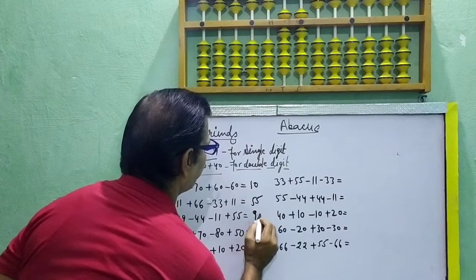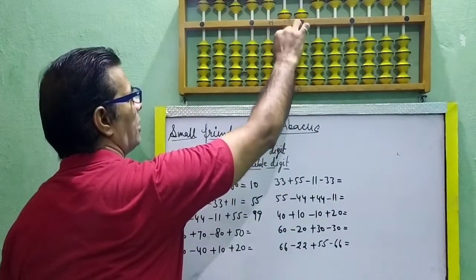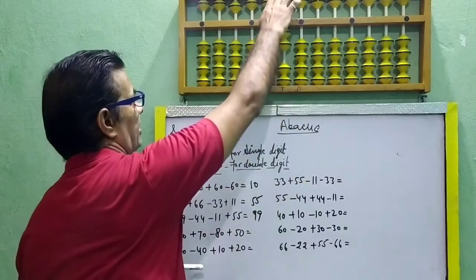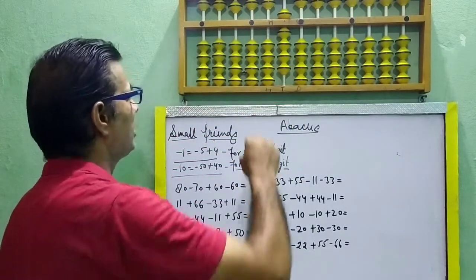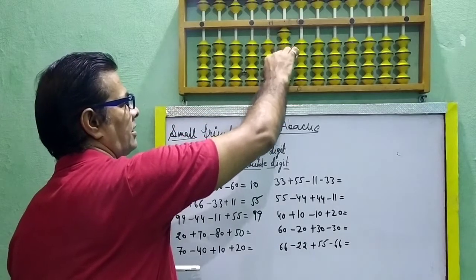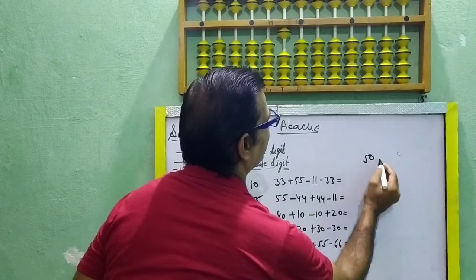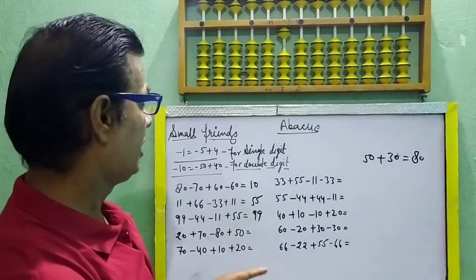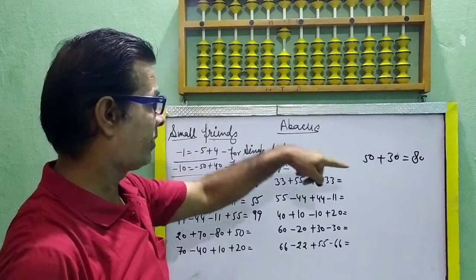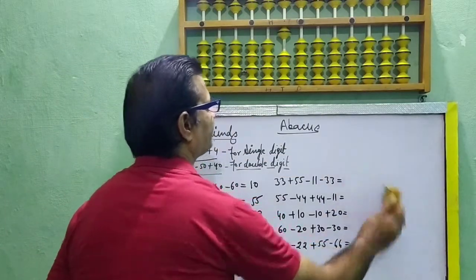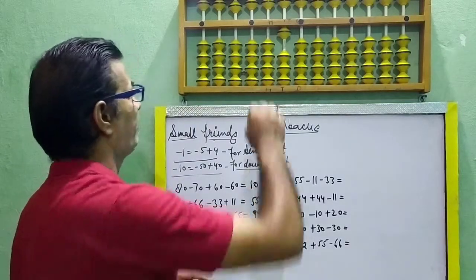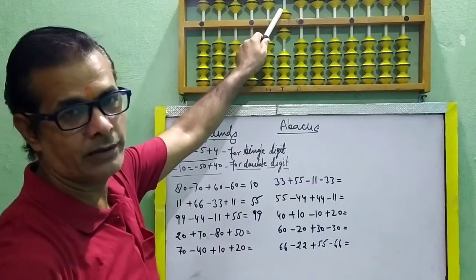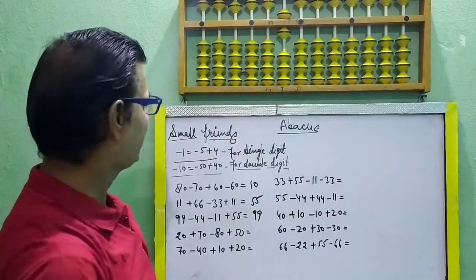Next question: 20. 20 — 10, 10, 20. Plus 70 — 50, 50, 50, plus 50, 60, 70. Minus 80 — 50, 60, 70, 80. Minus 80 means plus 50 plus 30, according to tools. And then plus 50. So your answer is here: 50 and 10 — 60. Answer is 60.